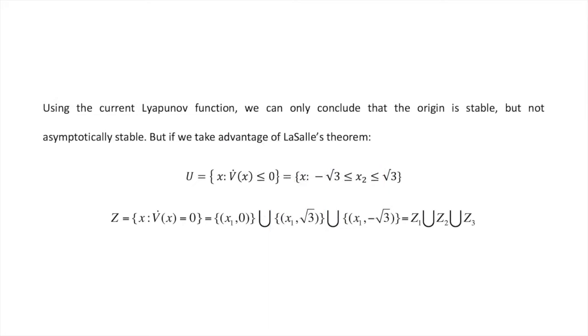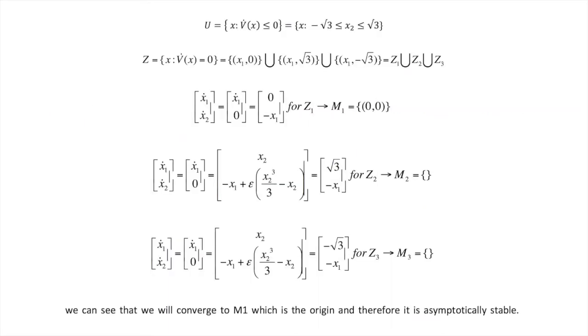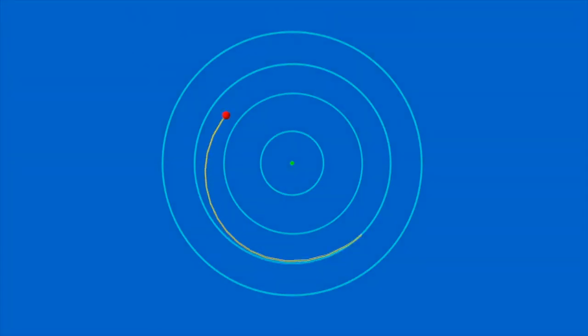But if we take advantage of LaSalle's theorem, we can see that we will converge to M1, which is the origin, and therefore we can say that the origin is asymptotically stable. Here's what it looks like.